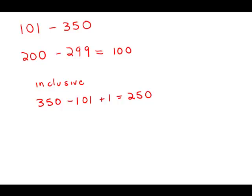So the probability is 100 tickets divided by 250 tickets, and this divides out nicely to 2 fifths. This is answer choice A.